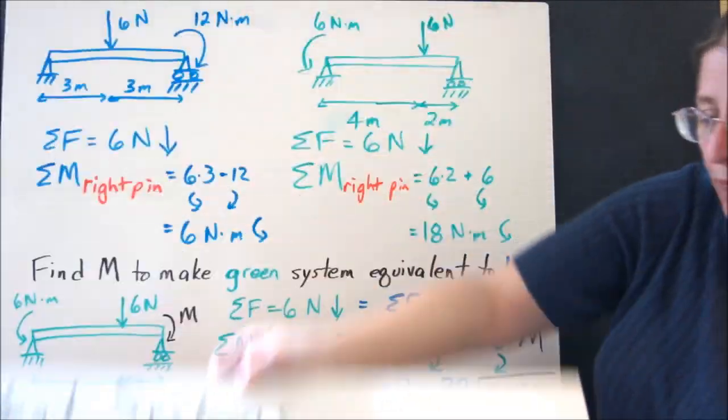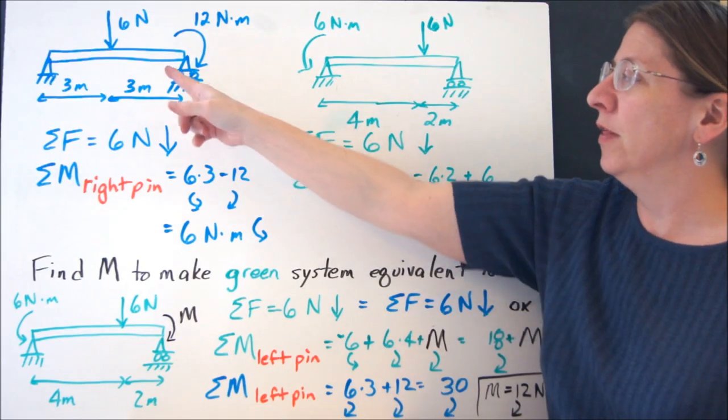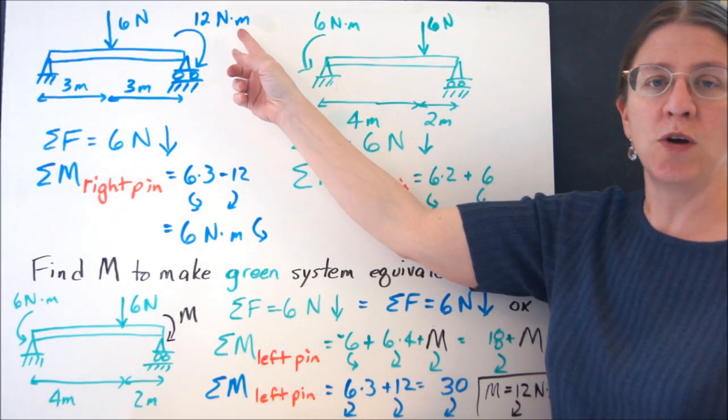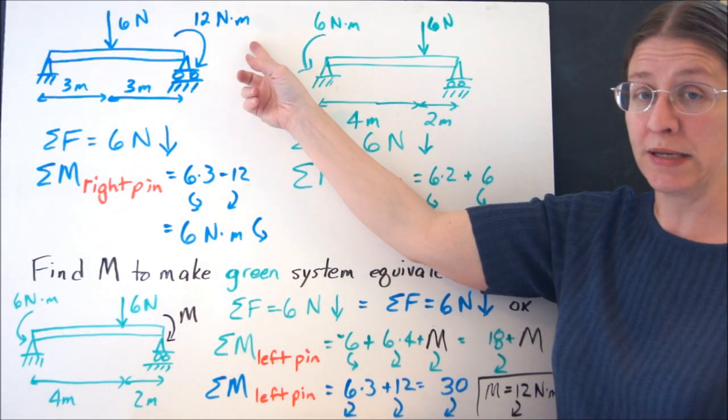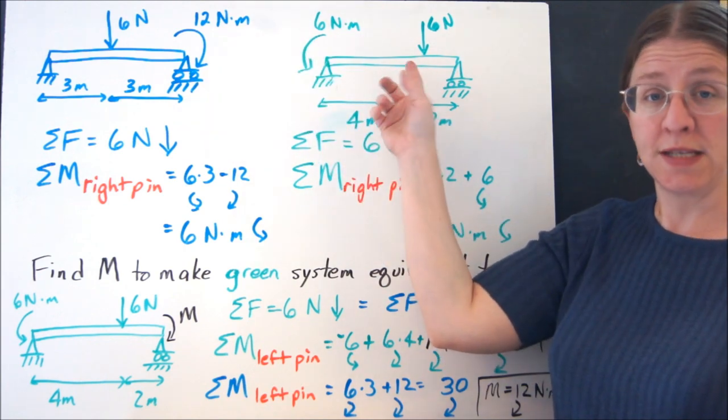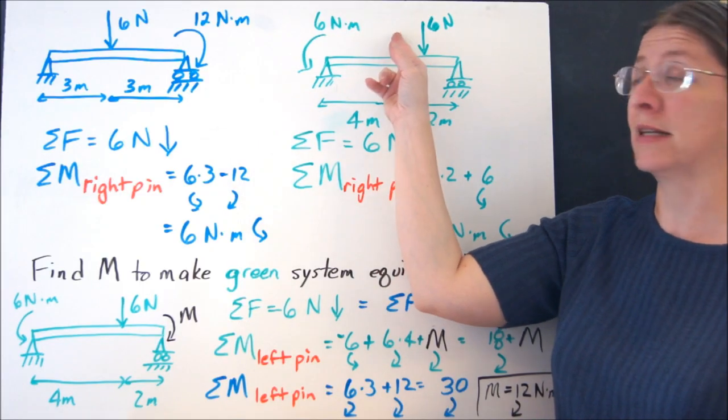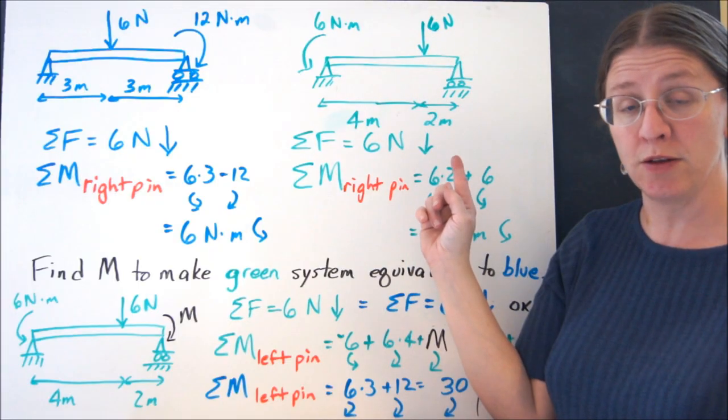For example, I have two beams right here, a blue one and a green one. On the blue one, I have a 6N load and a 12Nm moment at the end of the beam. On the green system, I have a 6Nm moment on one end and a 6N load at a different place on the beam.